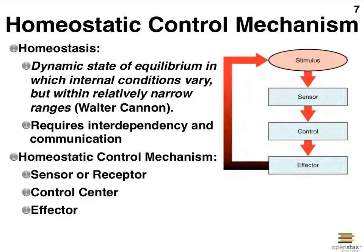We're finally getting to the meat of this presentation, and that is homeostasis. Homeostasis is a word you've been introduced to pretty much since day one in your biology classes, and you've learned that it has something to do with equilibrium in the body. Let's look at its definition introduced by physiologist Walter Cannon. He stated that homeostasis is not just an equilibrium — it's a dynamic state of equilibrium in which internal conditions vary, but when they vary, they do so within relatively narrow ranges. This requires a lot of communication between the various cells and organ systems of the body.